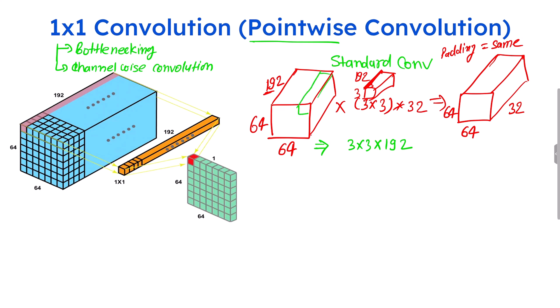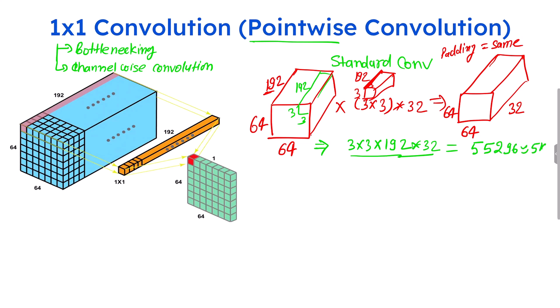So that gives us 3x3x192 per filter. Ignoring the bias term for simplicity, and with 32 total filters applied, the total parameters are 3x3x192x32, which equals 55,296 — roughly 55k parameters. That is how many parameters you need for this standard convolution.